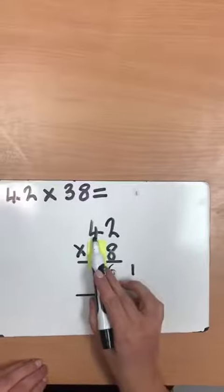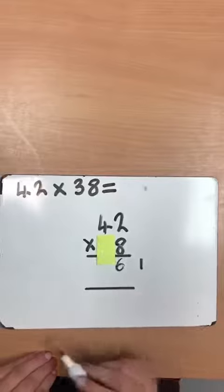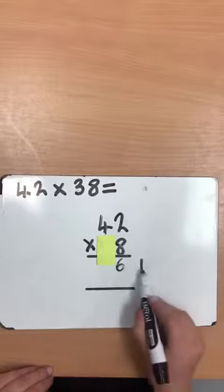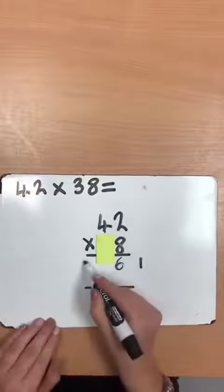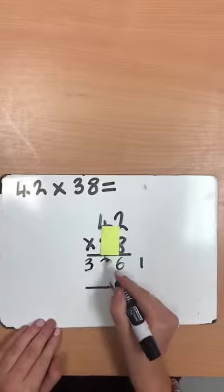Then they can do four tens multiplied by eight, which is 32 tens. But they need to add this ten on here. So that makes 33 tens.